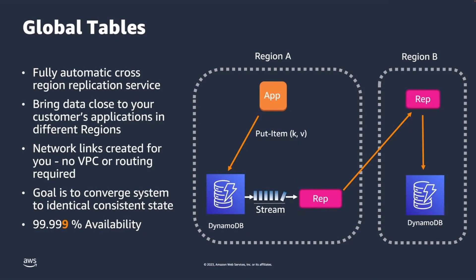This is a simple architecture describing how global tables works. Essentially, we have DynamoDB tables running in multiple regions. We have an application running in region A that's talking to a DynamoDB table in the same region. As that application makes changes to the DynamoDB table, the change events are copied into the DynamoDB stream, and the global tables replication infrastructure acts as a listener on that stream, sending those changes to its peers in another region, which then writes those changes to the DynamoDB table in the other region.